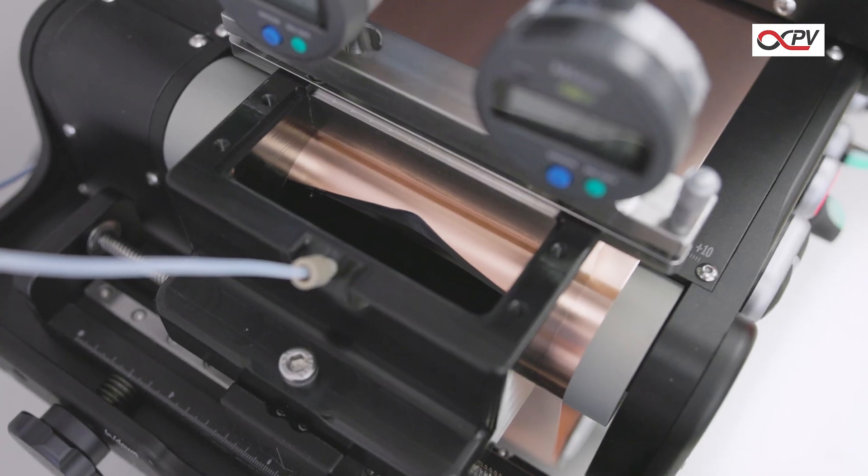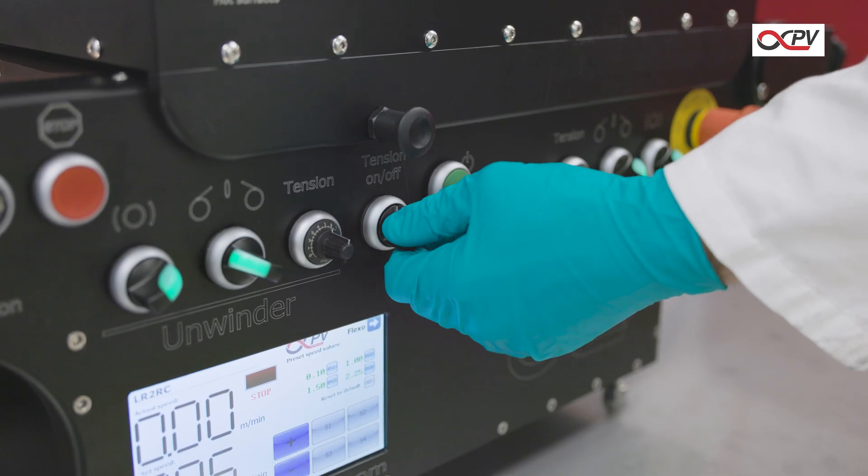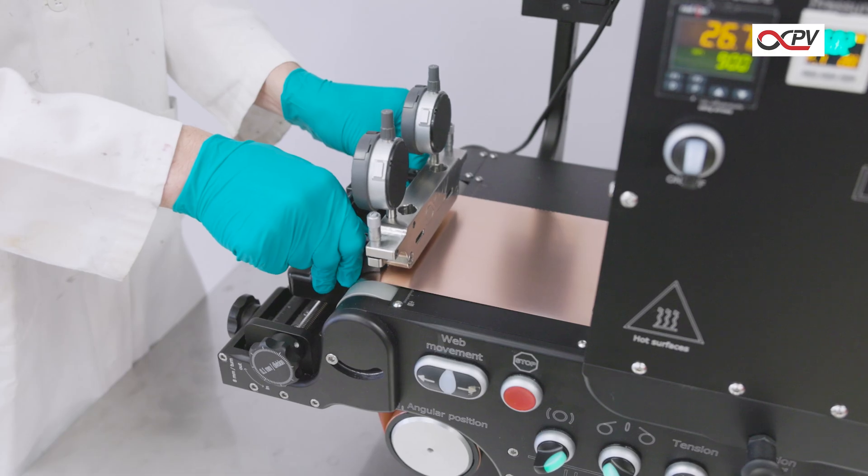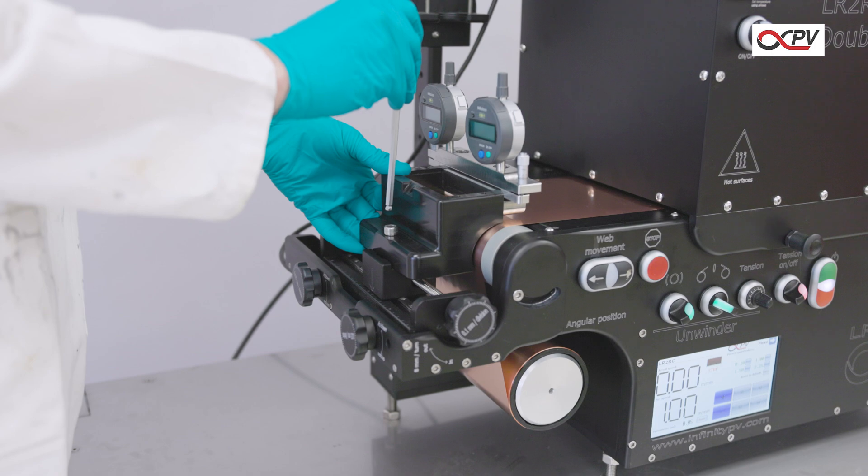Getting ready to coat is fast and straightforward. With the foil secured and web tension adjusted, mount the slurry coater onto the laboratory roll-to-roll coater platform using an Allen key.